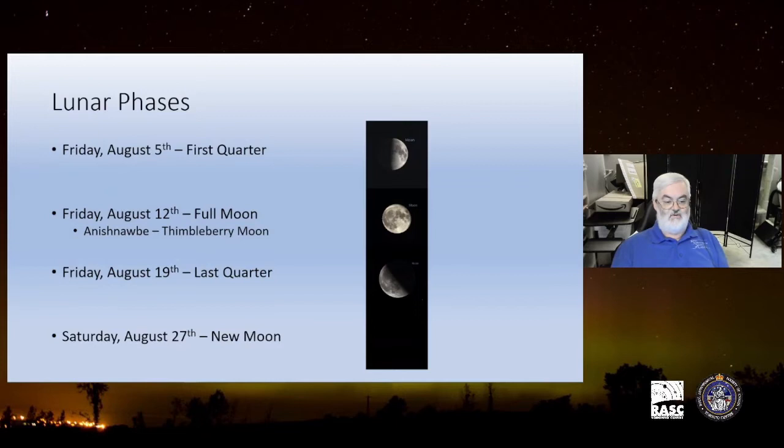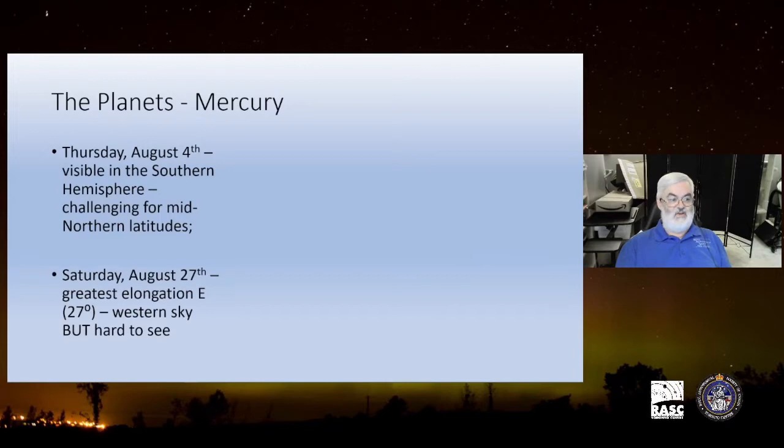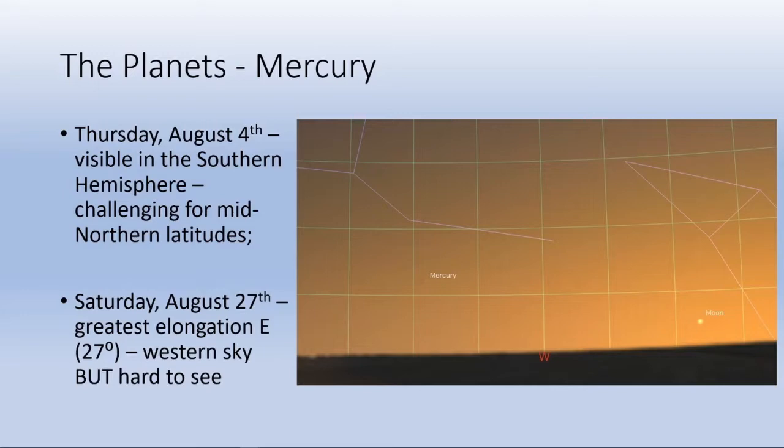Let's take a look at where Mercury is going to be. It's on the fourth, it's visible in the southern hemisphere and it's challenging for anyone in the mid northern hemisphere and the latitudes here. In other words, it sucks to be honest. Its greatest elongation on the 27th in the western sky, but it's going to be really hard to see. From Stellarium you can see here that Mercury is just this tiny dot that's to the west of due west, and the moon is in the sky at the same time.